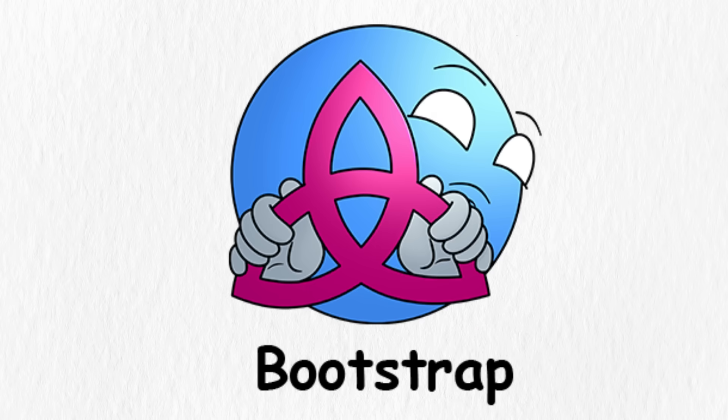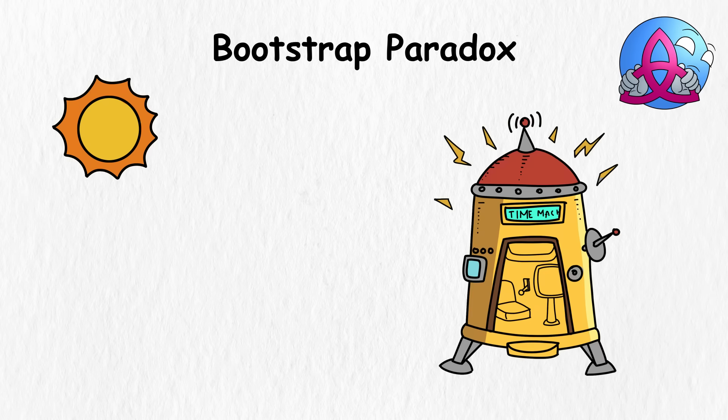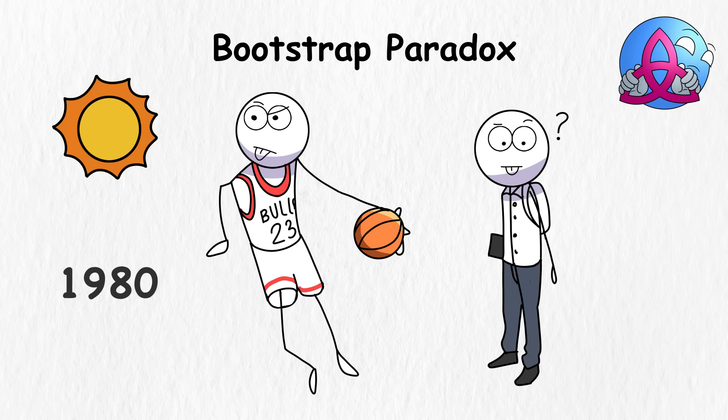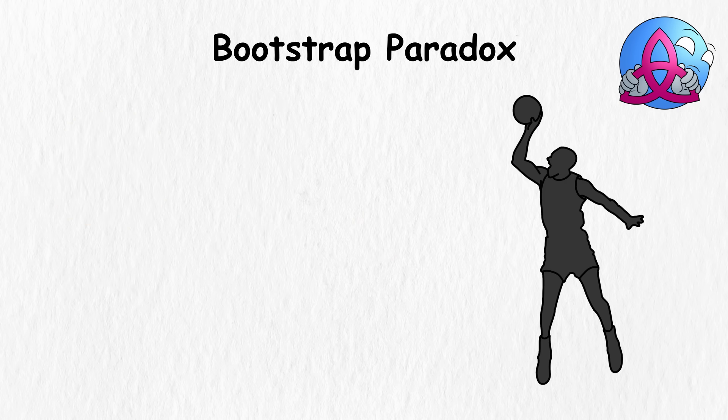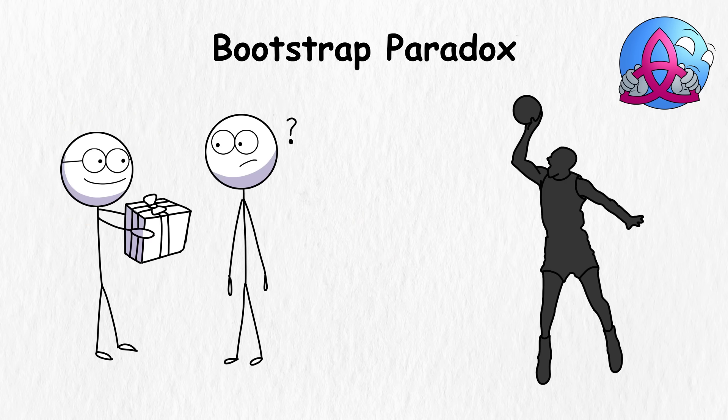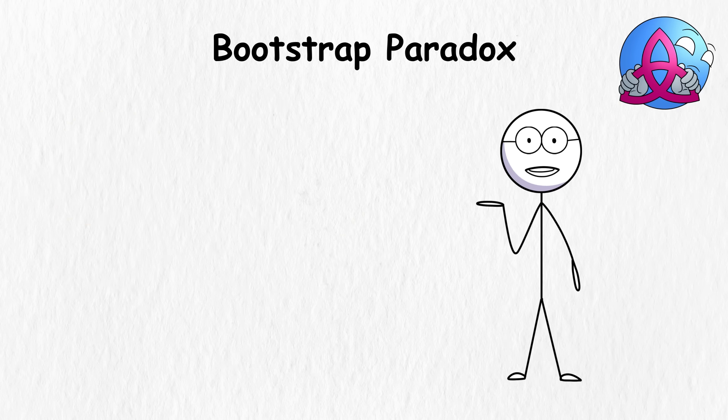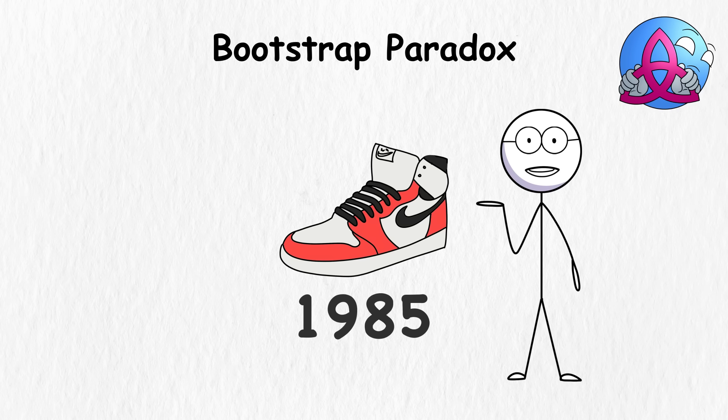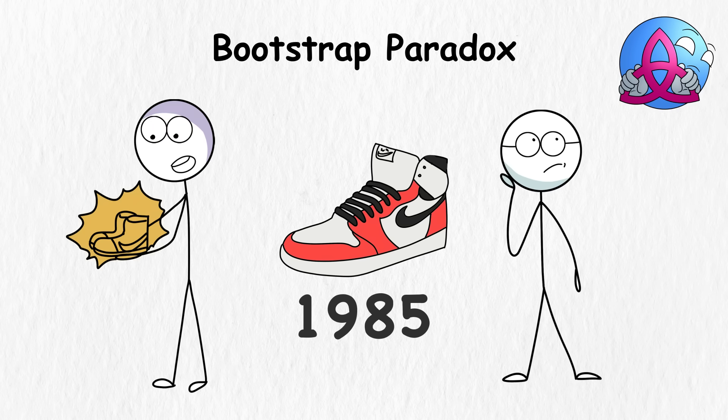Bootstrap Paradox. One day, you created a time machine. You decided to go back to 1980 to meet Michael Jordan when he was in college. As a token of your appreciation for his legendary status, you gave him a pair of one of his Jordan sneakers. The problem is that the first Jordan shoe was released in 1985, well after you gave MJ your gift. But Jordan got inspired by the shoes you gave him, so he decided to team up with Nike and release more similar shoes.